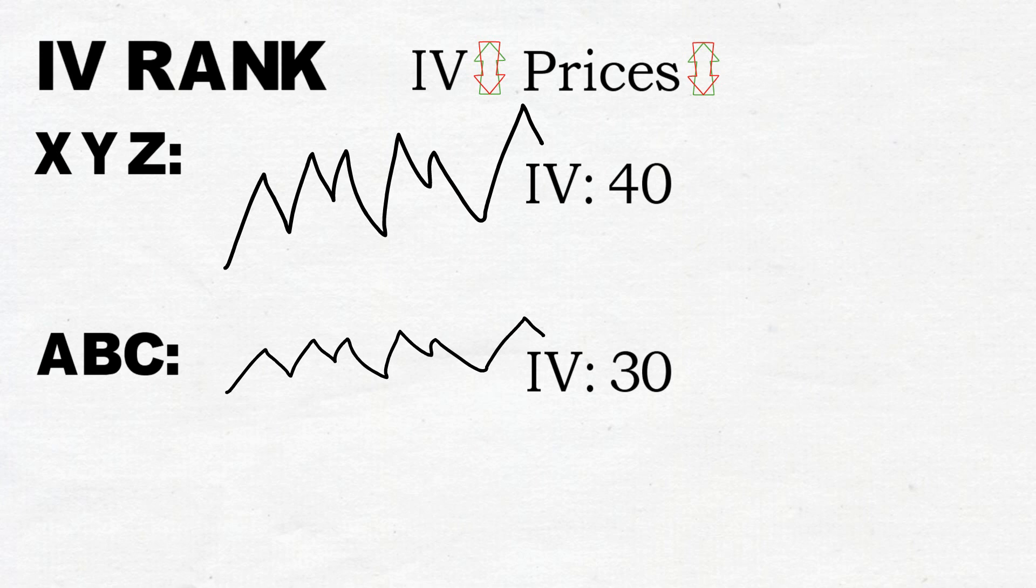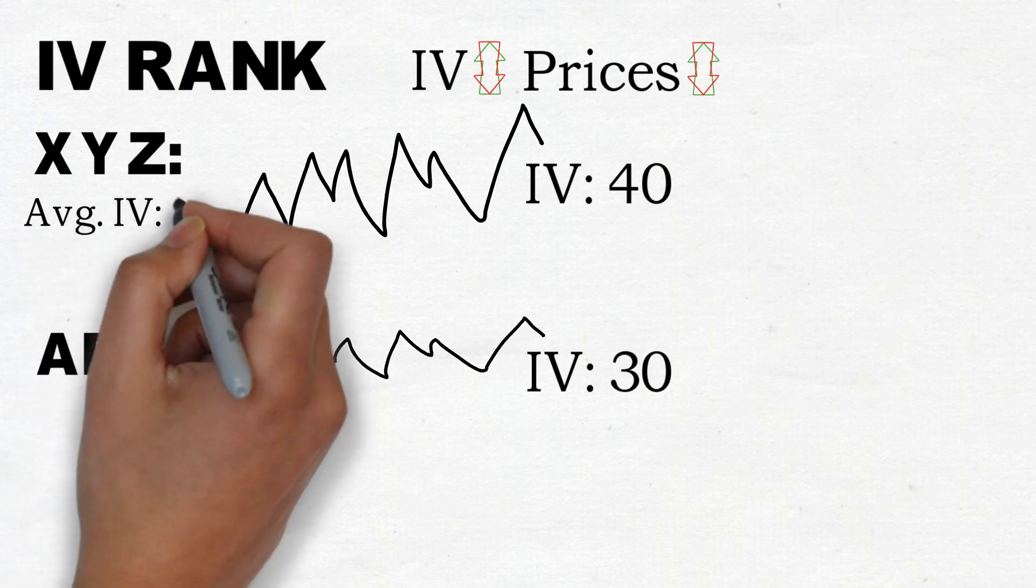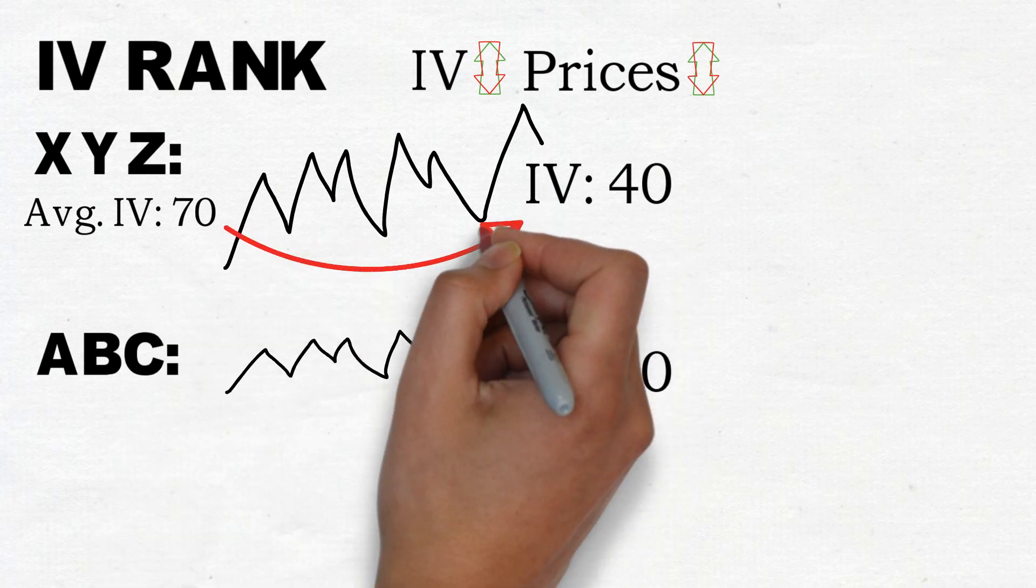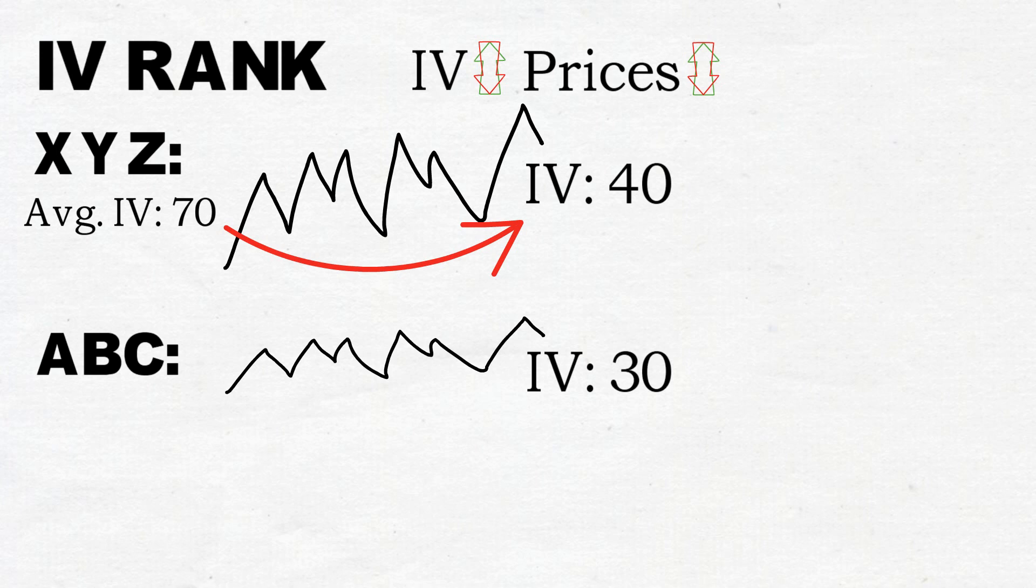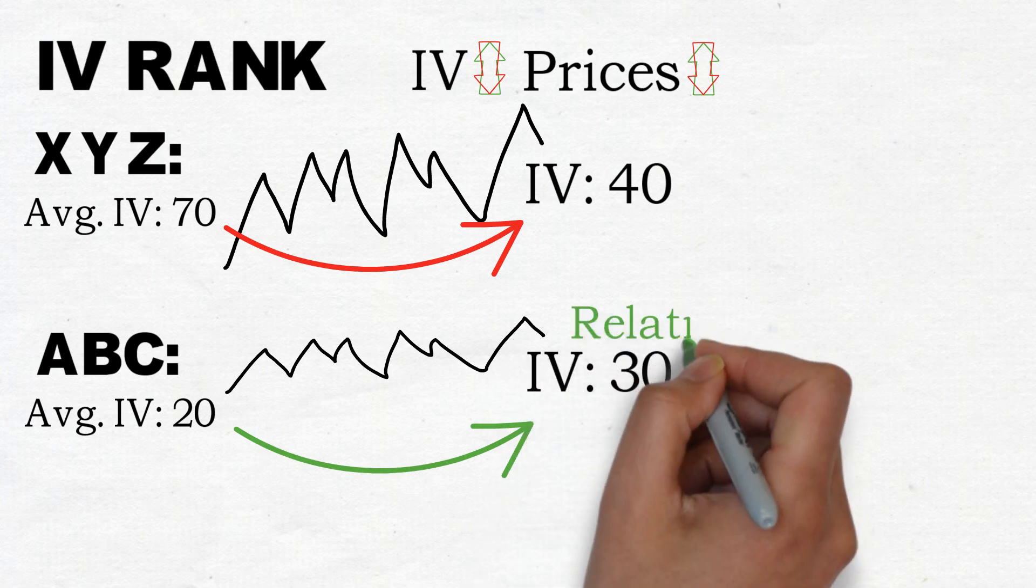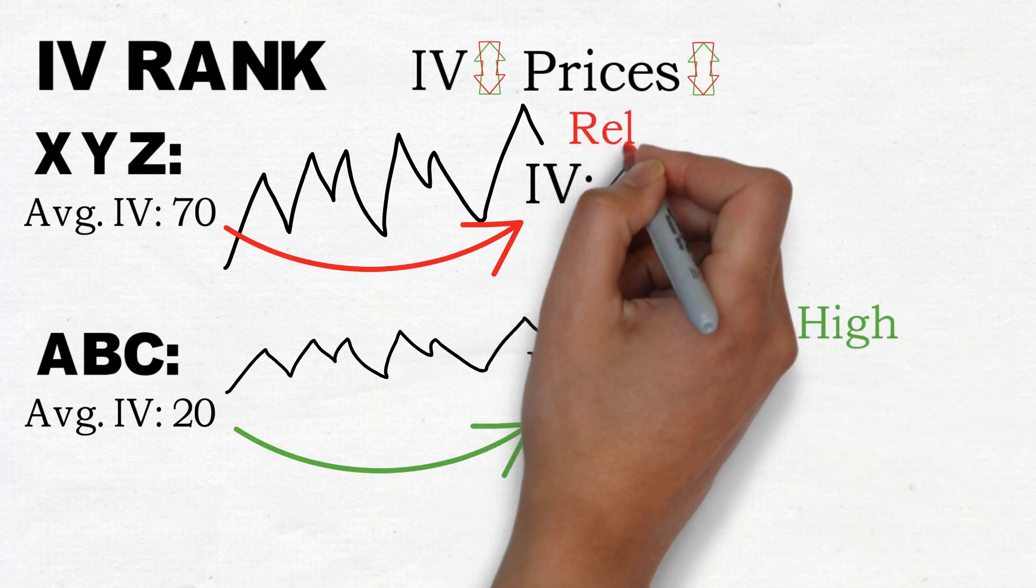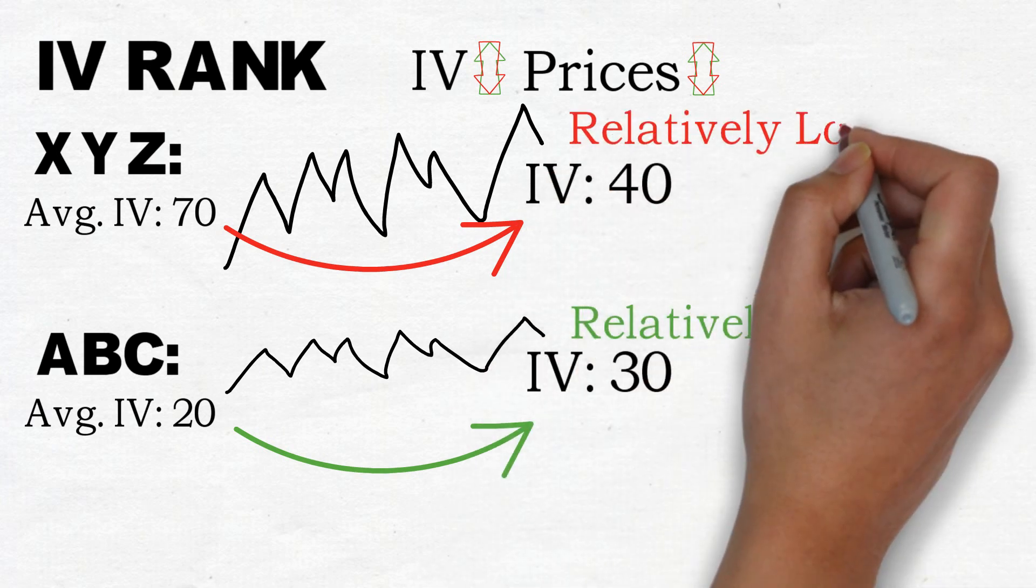Let me give you a more specific example to clarify this. Let's say XYZ is usually a very volatile stock and has an average implied volatility of 70%, but now the IV dropped down to 40%, whereas ABC tends to have an IV level of around 20% most of the time, but now its implied volatility has gone up to 30%.